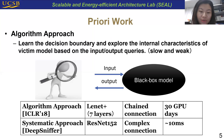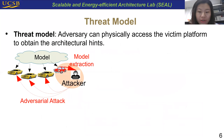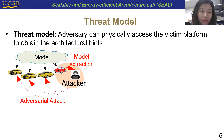First, I will introduce the attack model and the demonstration cases in our work — note it can also be extended to other attack cases. The attack model is that the adversary can physically access the victim platform to obtain architectural hints. Such a model is practical because of the commonly used deployment strategy: we train a model in the cloud and then deploy it to edge devices. If we can physically access one device and do the model extraction, then we can attack all other devices because they all share the same model.